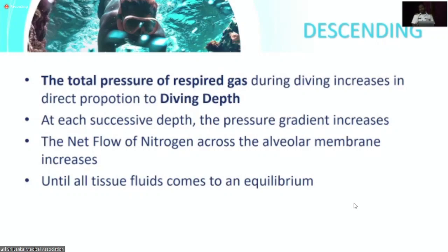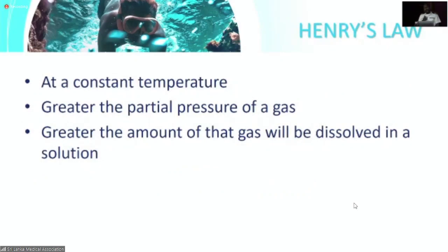Even though oxygen dissolves more, it is utilized in metabolism. But nitrogen is an inert gas — it accumulates in soft tissues, dissolving until it reaches equilibrium. This is explained by Henry's Law: at a constant temperature, the greater the partial pressure of a gas, the greater the amount of that gas dissolved in solution. That is why nitrogen dissolves into tissues at a much greater amount than at the surface.